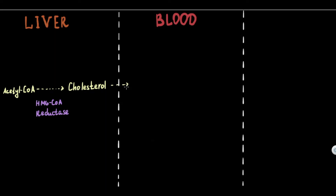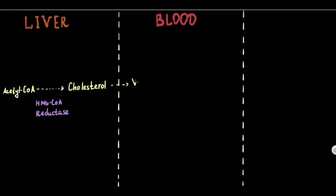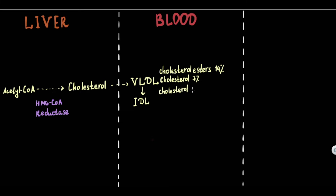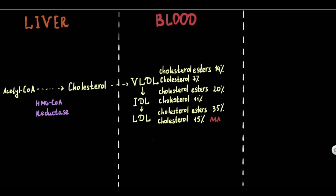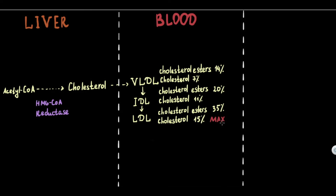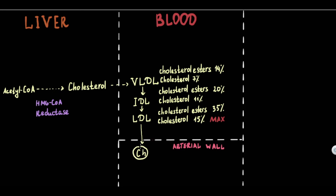Cholesterol created by the liver is carried to the tissues by different types of lipoproteins, including very low-density lipoproteins, intermediate-density lipoproteins, and the most cholesterol-saturated, low-density lipoproteins. Low-density lipoproteins can cause accumulation of cholesterol in the arterial wall and lead to atherosclerosis.